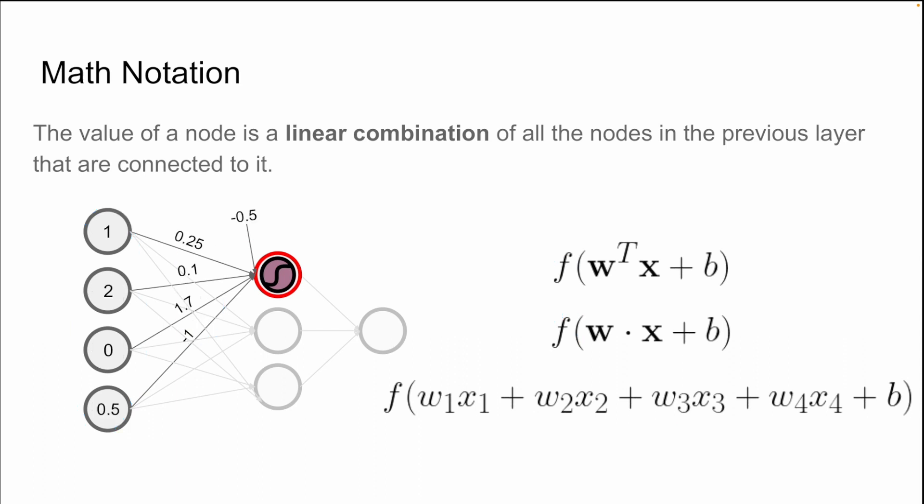Let's do an example with actual numbers. First, we need to take all of the values from the previous layer that are connected to this node and multiply them by their weights. So we get 1 times 0.25, plus 2 times 0.1, plus 0 times 1.7, and last but not least, plus 0.5 times negative 1. Then, of course, we need to add our bias, which in this case is negative 0.5.